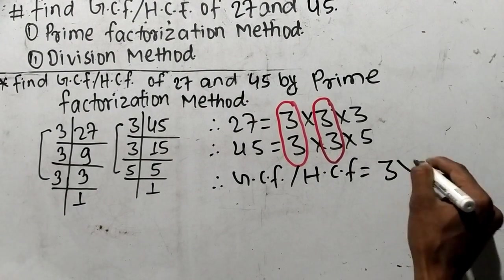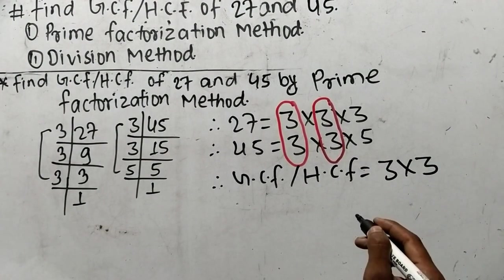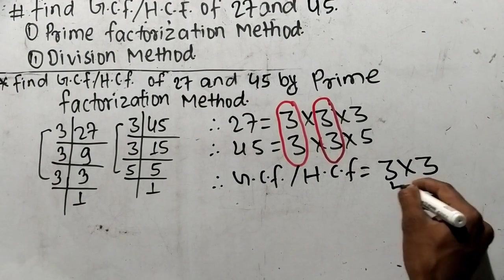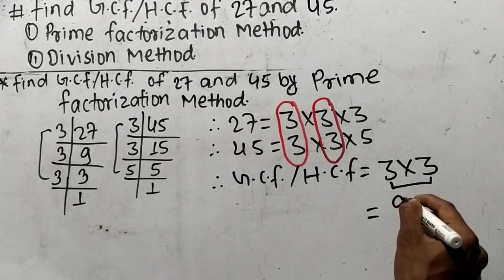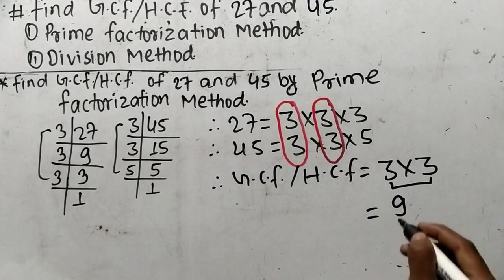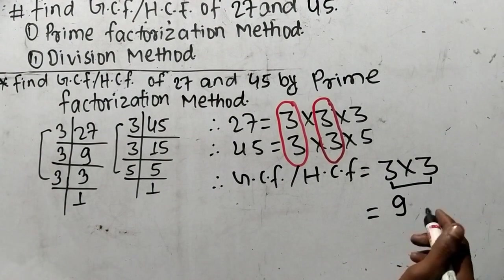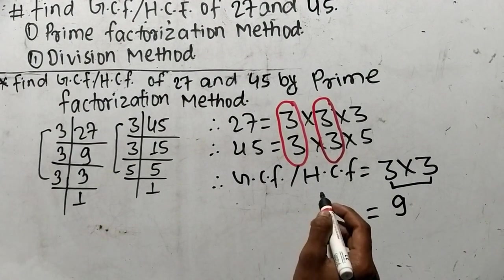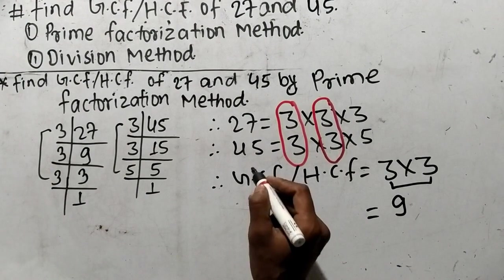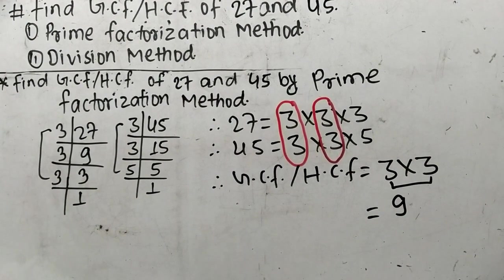GCF or HCF is the product of all common factors only. We have common factors 3 and 3, so we have to find out the product of these common factors. It is 3 times 3, which is equal to 9. Therefore 9 is the GCF or HCF of 27 and 45. In this way we can find out GCF by prime factorization method.